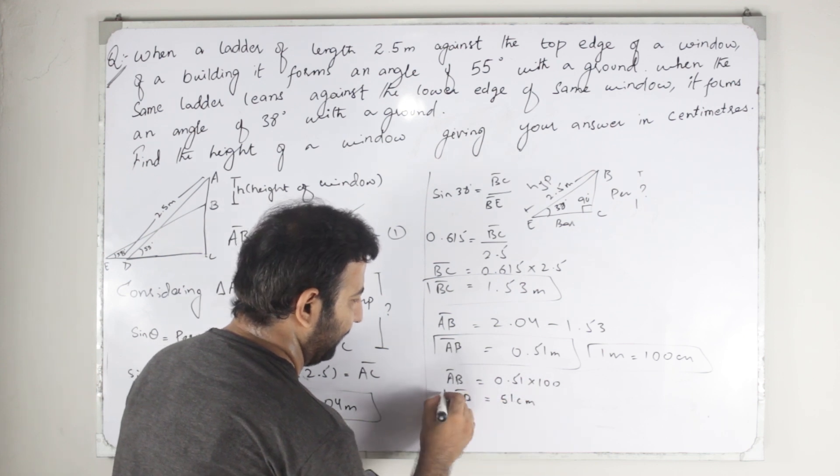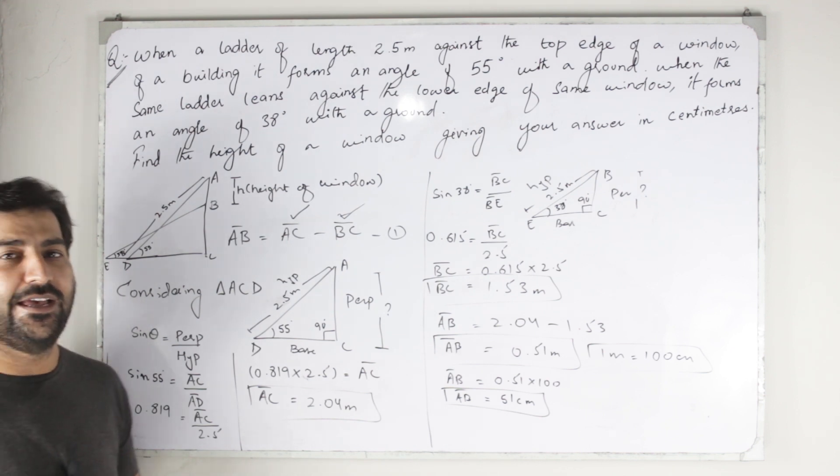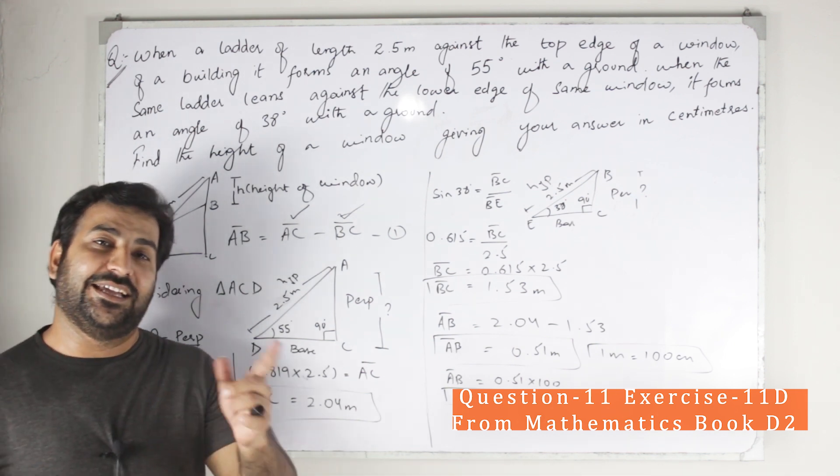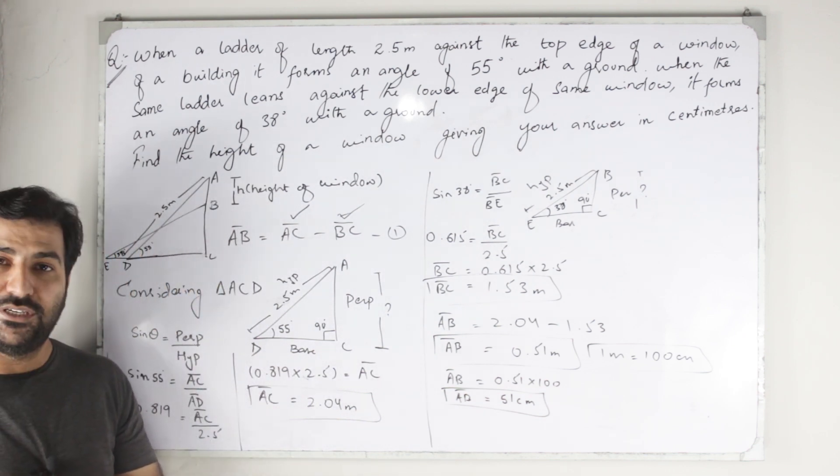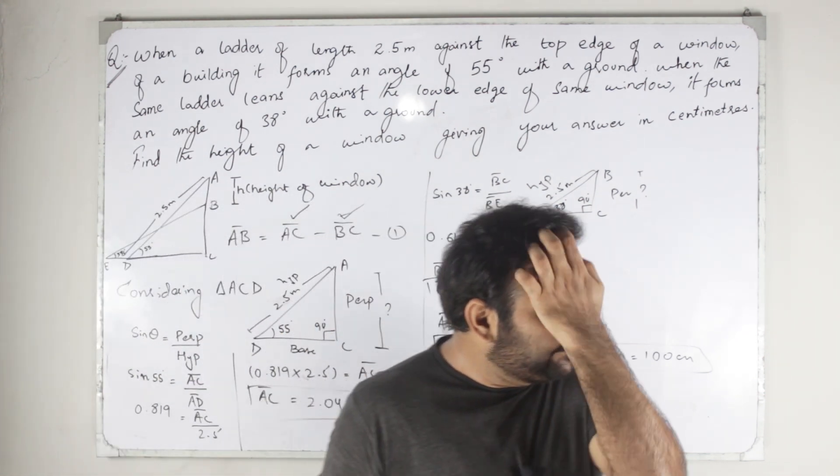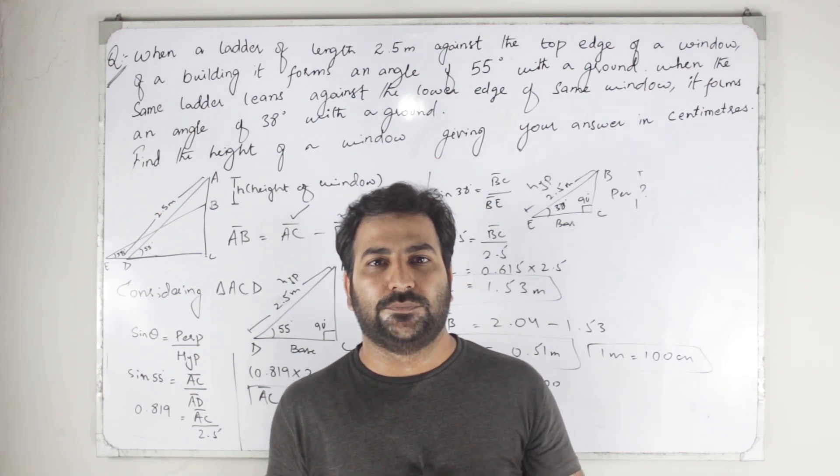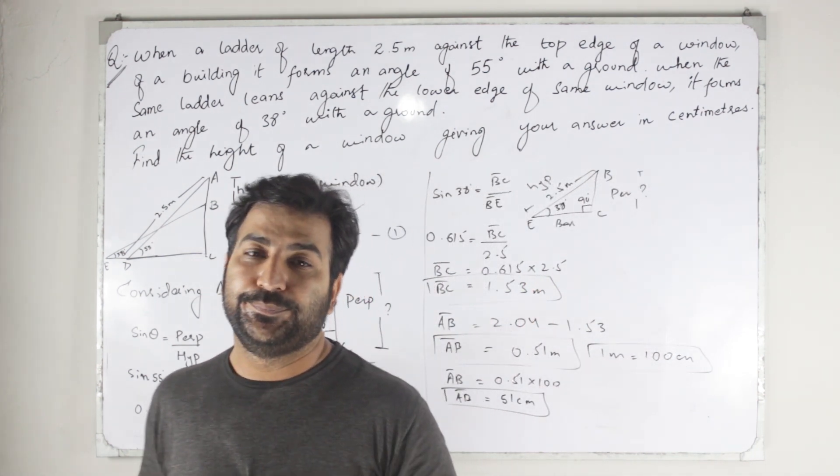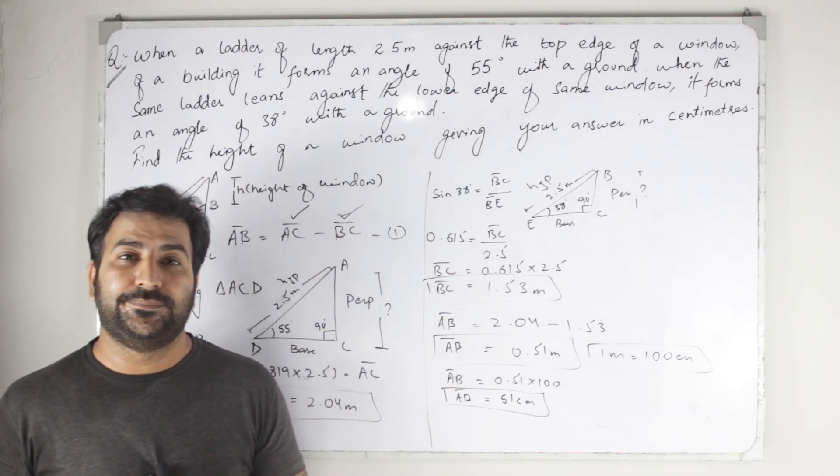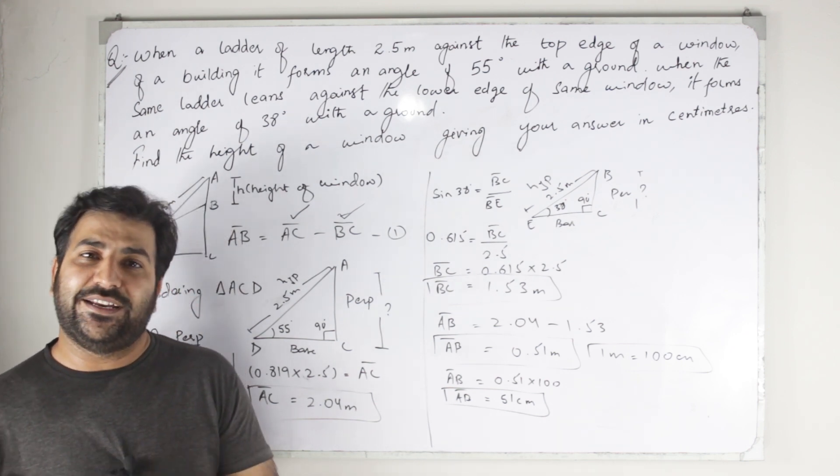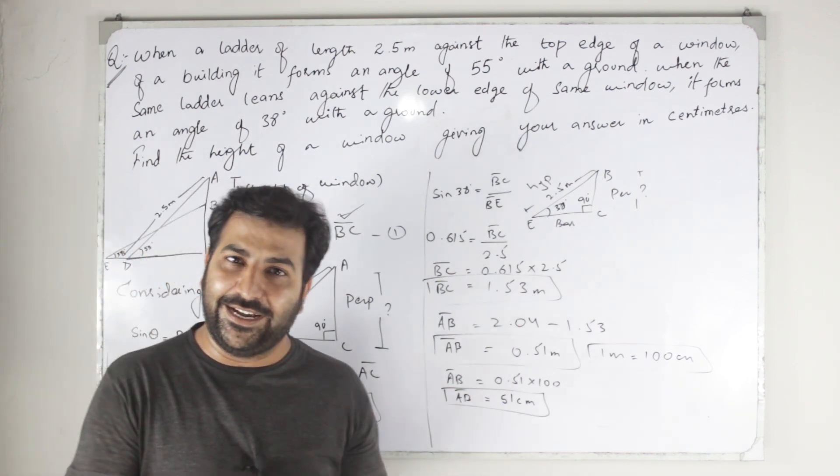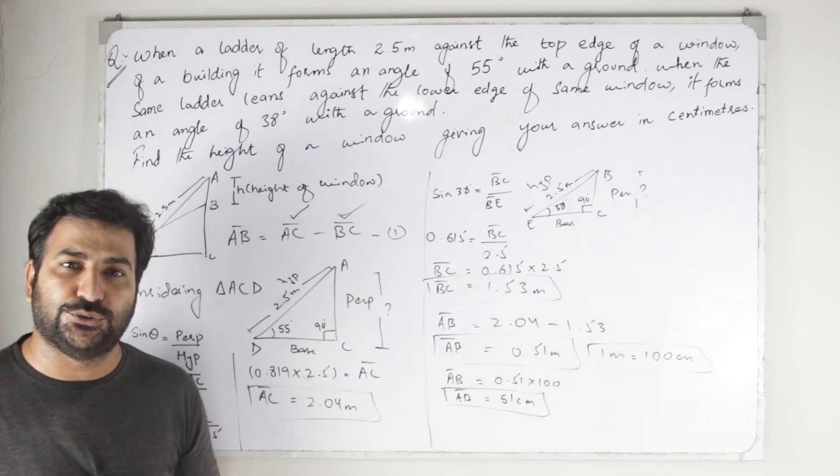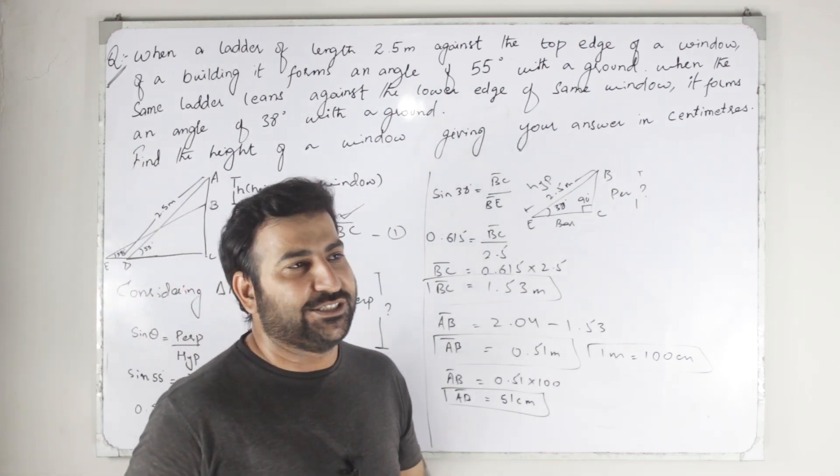0.51 multiply 100 and the answer is 51 centimeters, which is the correct answer. You can see here on the screen this is actually the question of exercise 11D, question 11, and you can easily see the answer. This is the question which is solved by the help of trigonometric ratio, and you can see we have found the height of window. By trigonometric ratio we can solve for height, length, or distance between two points. Thank you so much for your love. Inshallah, we will see you soon. Allah's peace.